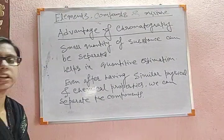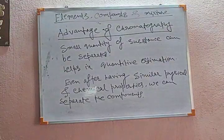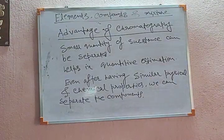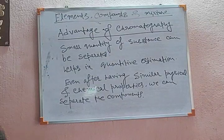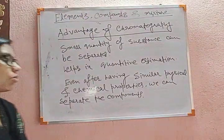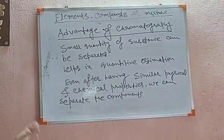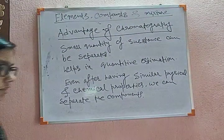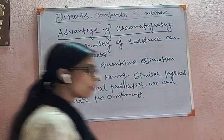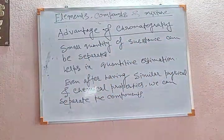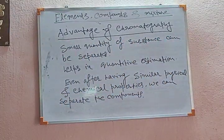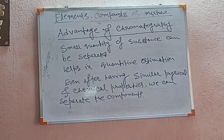Physical properties mean boiling point, melting point, solubility, etc. Chemical properties mean the tendency of undergoing any reaction. When these are similar, it is very difficult to separate that type of mixture, and in that case we can apply the chromatography technique.